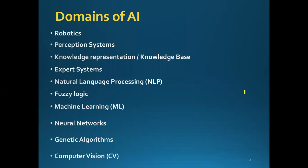Today, the main areas of Artificial Intelligence are reasoning, communicating, seeing, and so on. The other main domains of Artificial Intelligence are robotics, perception systems, knowledge representation or knowledge base, expert systems, natural language processing commonly called NLP, fuzzy logic, machine learning, neural networks, genetic algorithms, and computer vision. These are the main domains of Artificial Intelligence, or the fields in which AI methods are used.